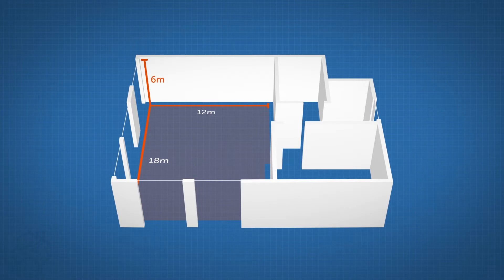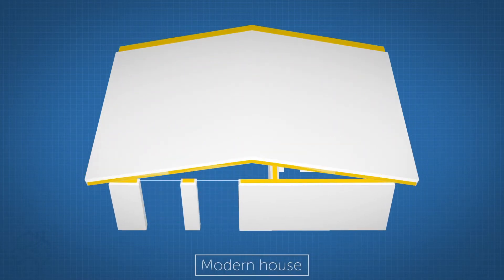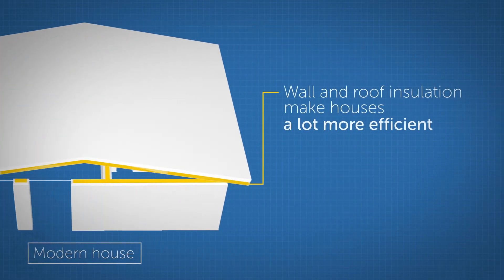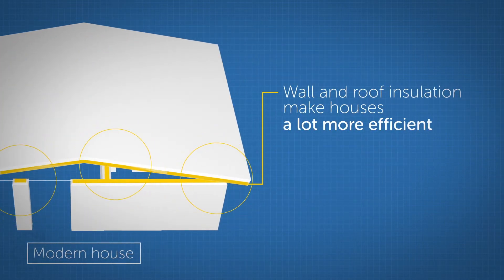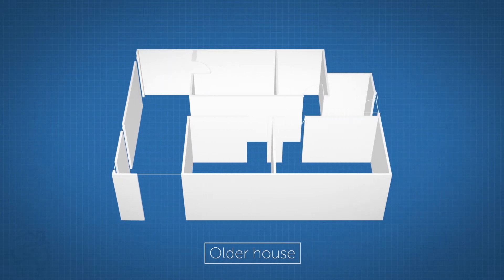The level of insulation in your house will greatly affect the heating requirements. Most modern houses have wall and roof insulation, making them a lot more efficient. However, older style houses can be less insulated, causing heat to leak from the house.